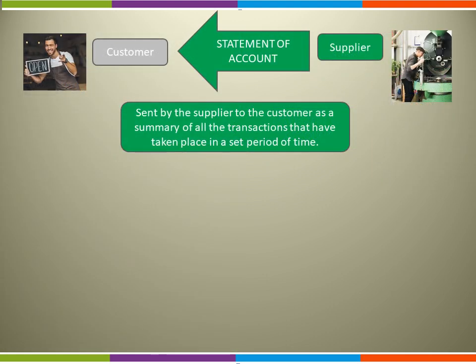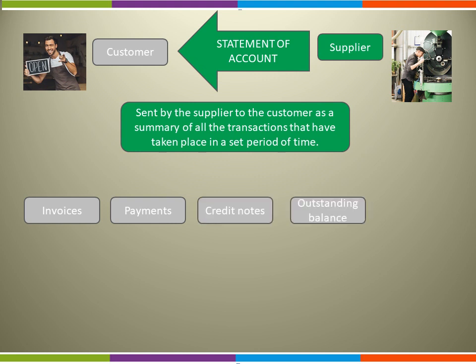The Statement of Account is the final document in our flow of financial documents. It is issued from the supplier to the customer as a summary of the transactions that have taken place in a set period of time. It shows the invoices, payments, credit notes and an outstanding balance. The invoices are shown as positives; the payments and credit notes are shown as negatives.